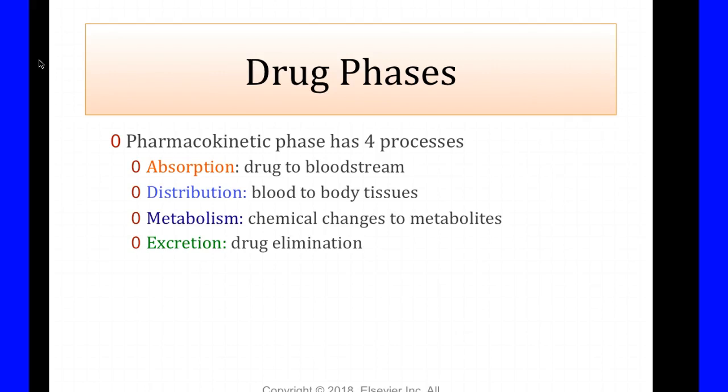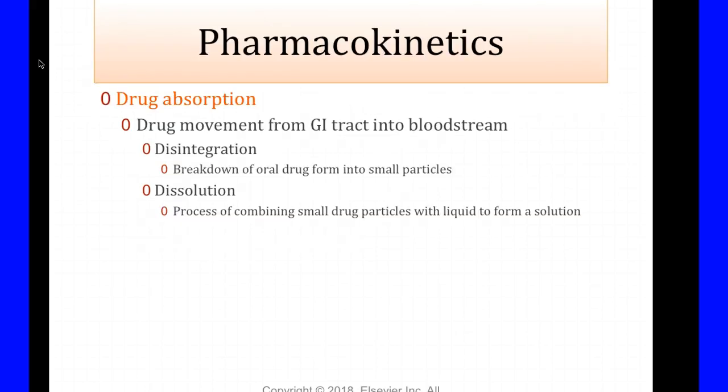How is it absorbed? Distribution — it's in your bloodstream, now it has to distribute out to the body tissues. Metabolism — chemical changes. What happens to the drug at this point? It breaks down and metabolizes. A lot of this happens in the liver; there are a few drugs that metabolize in the kidney, but most are in the liver. And then excretion — how is it eliminated out of your body?